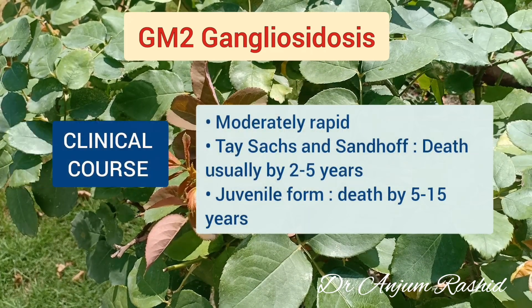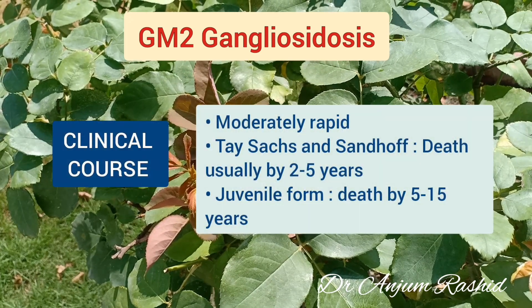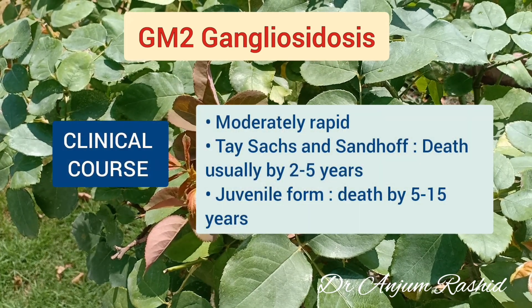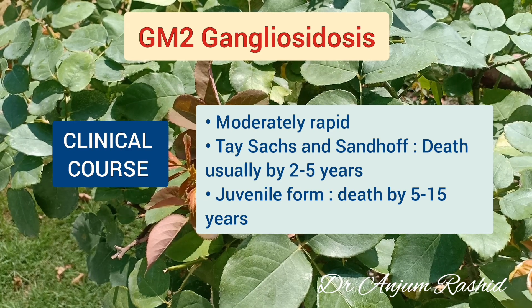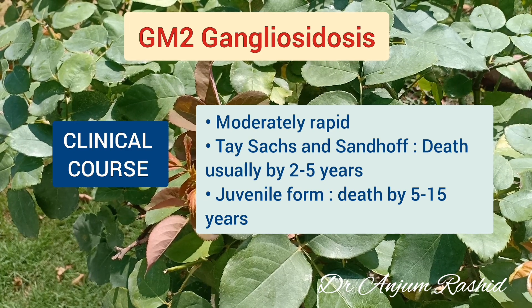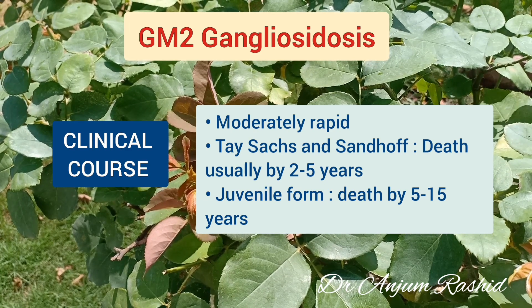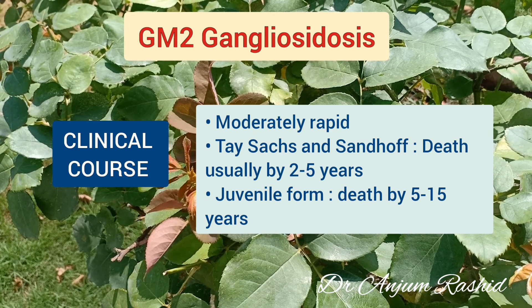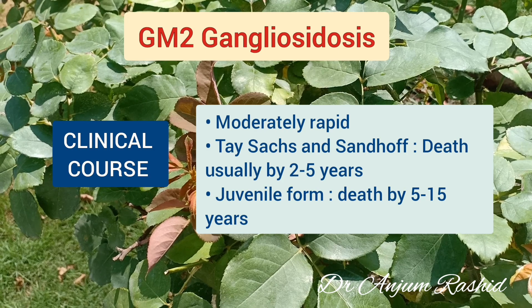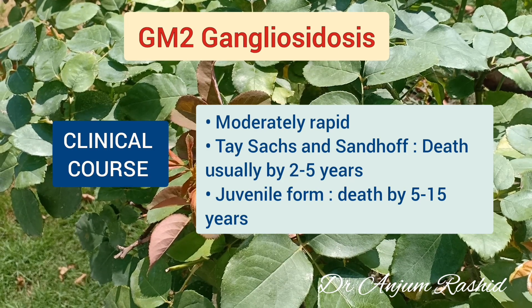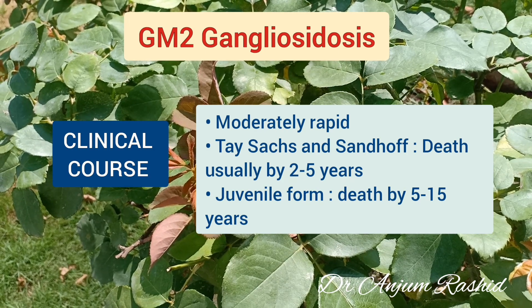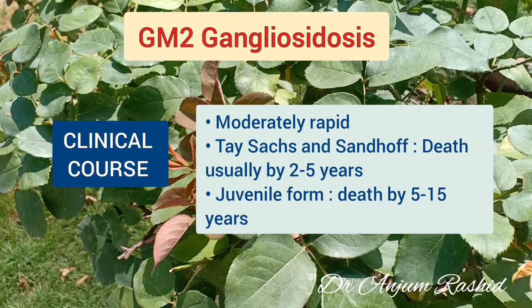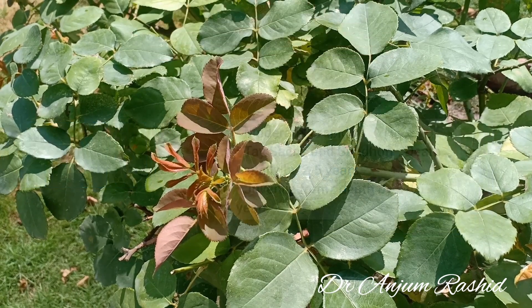The clinical course of GM2 gangliosidosis is moderately rapid. In Tay-Sachs disease and Sandhoff disease, death usually occurs by 2 to 5 years, while in the juvenile form, death occurs by 5 to 15 years of age.